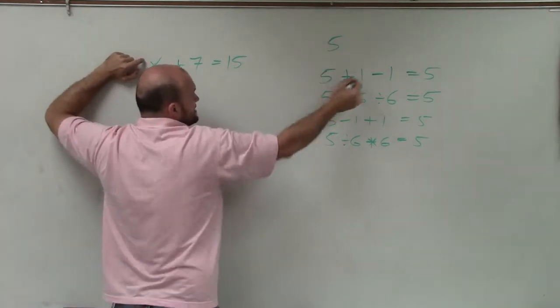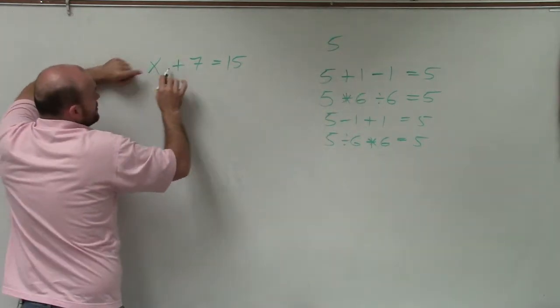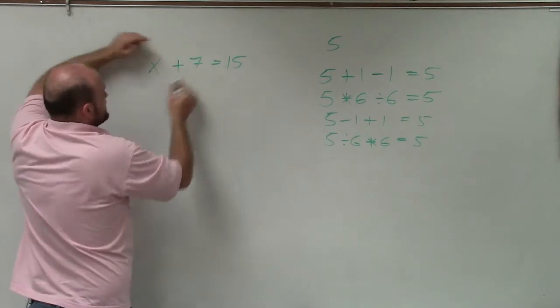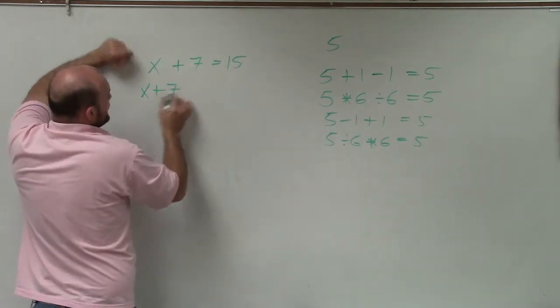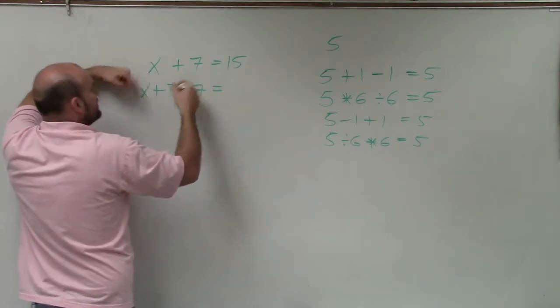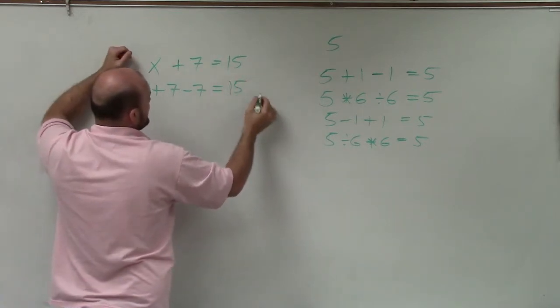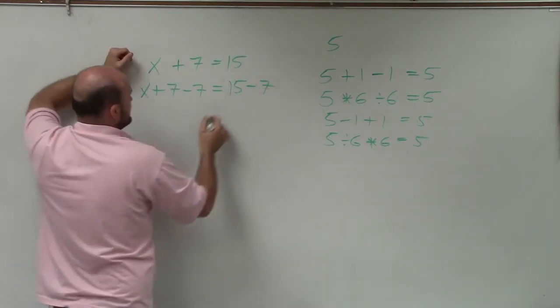I just want it by itself. I just want it to be 5. I don't want it to be 5 plus 1. So I need to undo what's happening to that 7. Since I'm adding 7, I'm going to subtract 7. And whatever I do on one side, I'm going to subtract 7 on the left side.